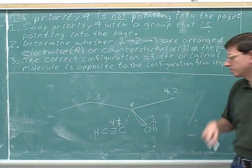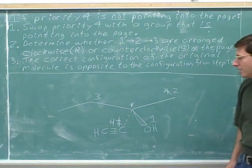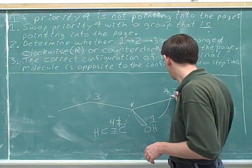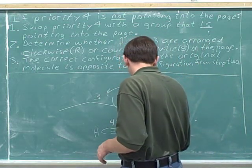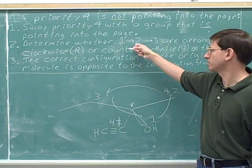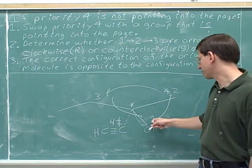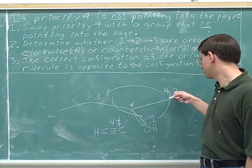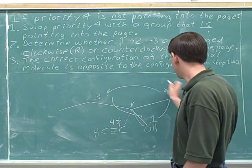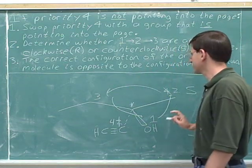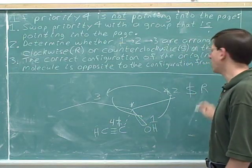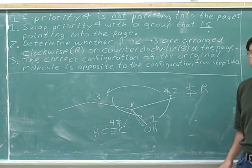So as usual, we simply cross out the original numbers and write down the new numbers after the swap. Now we have to figure out what the configuration of one to two to three is based on the new positions of the numbers. Going from one to two, I'm using the position of the two up here, not where the number two used to be. On the page we have a counterclockwise or S configuration. That means step three: before the swap, the original molecule must have had an R configuration. The answer is that the stereocenter was R.